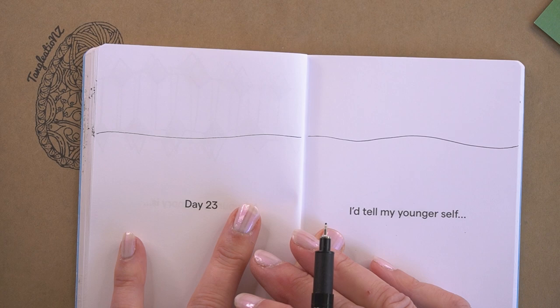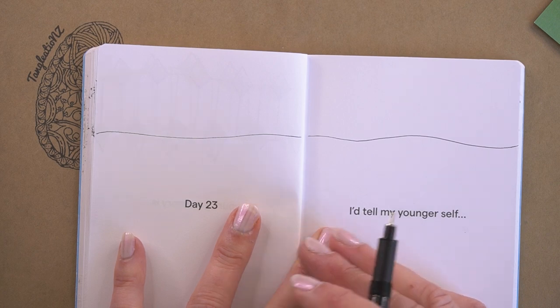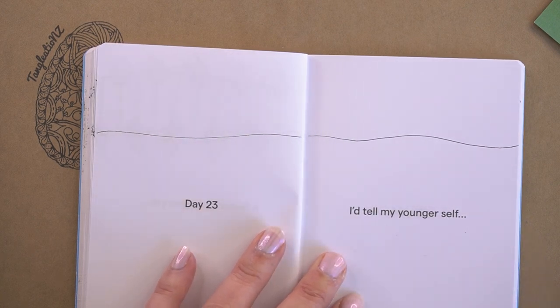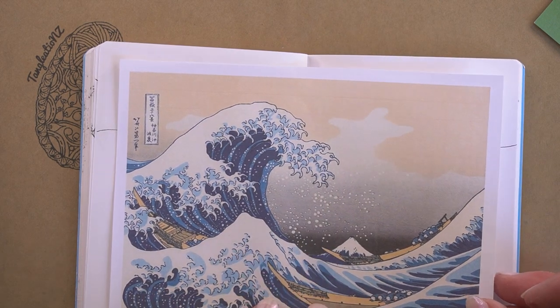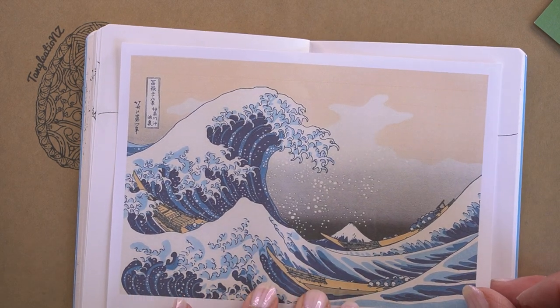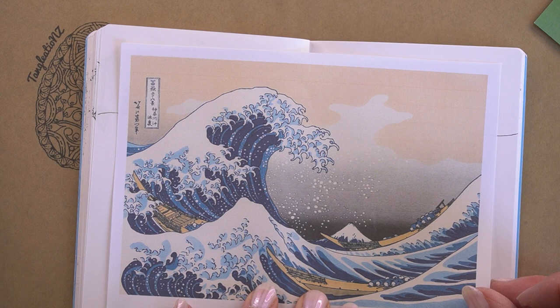The tangle that I want to do is called Hokusai by Sayomi Koitki. It is based and she gets her influence from this beautiful wood block print by Kashuhai Hokusai.